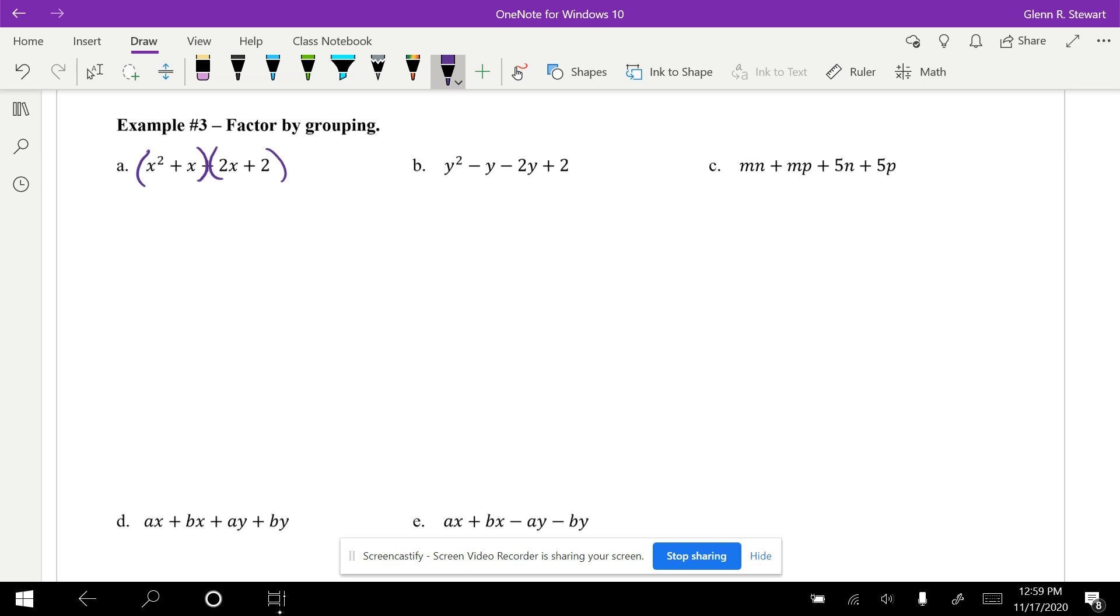For instance, in my first group I have x² + x, bringing this down to its simplest form. In my other group I have 2x + 2. These both share an x, so I'm going to pull that out front.